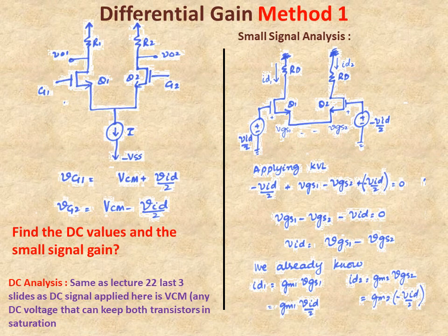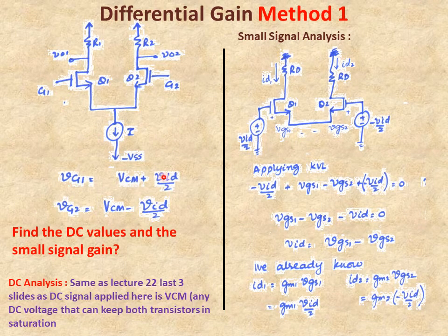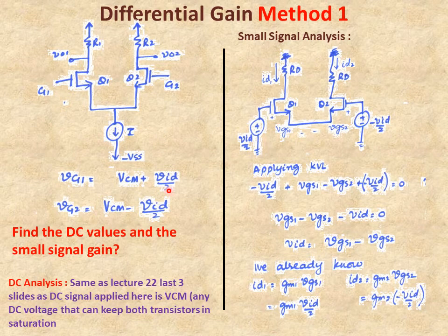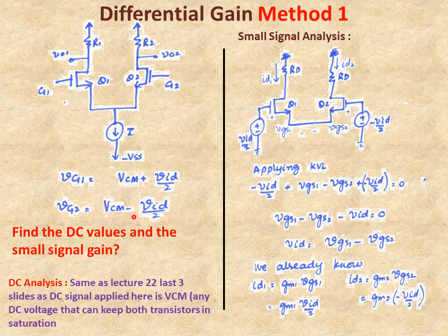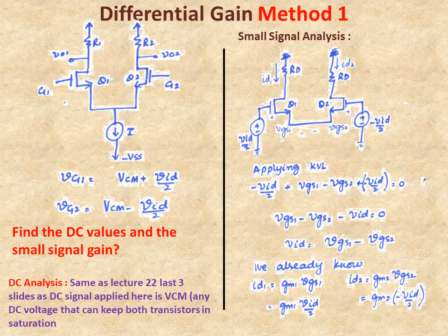Now we find the differential gain. The same differential amplifier: gate G1 has voltage VCM + VID/2 and gate G2 has VCM minus VID/2. These total signals comprise both DC and AC parts. Previously only DC (VCM) was applied to both terminals. Now, in addition, gate 1 gets plus VID/2 and gate 2 gets minus VID/2 as AC signals. We need to find DC values and small signal gain.